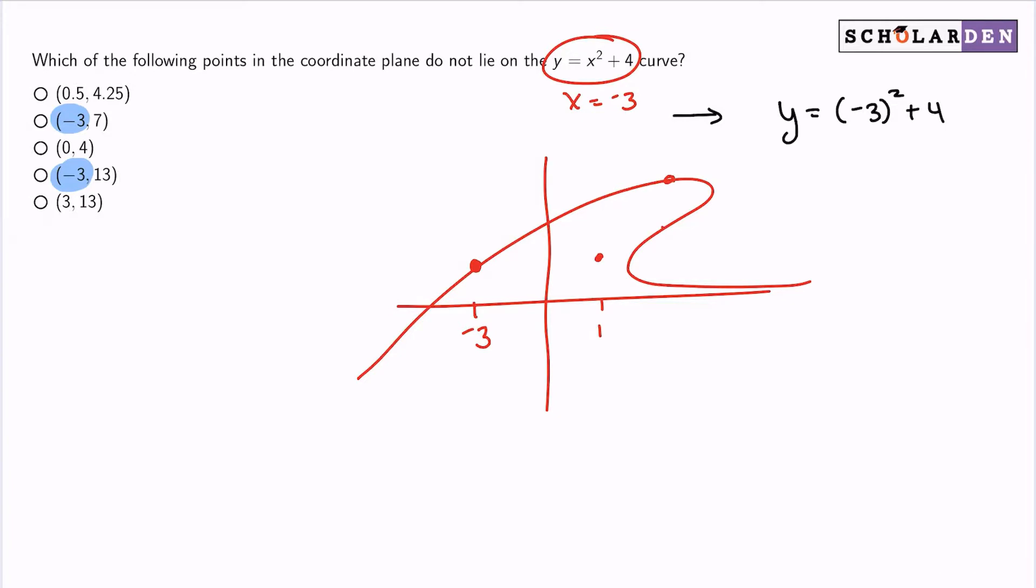From here, I'll go ahead and square negative 3, which is positive 9. 9 plus 4 equals 13. So that means that negative 3, 13, does lie on the curve because that's what we get when we apply it.